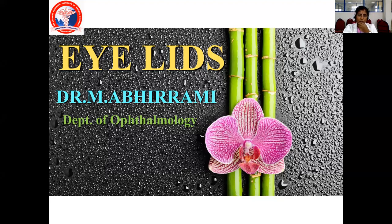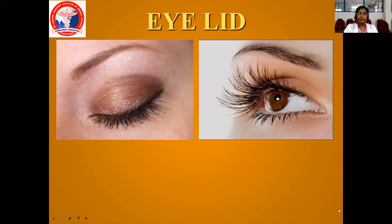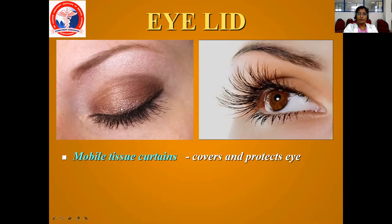Good morning. Today we are having a class on eyelids. We will start with the anatomy of eyelids. Usually we have two lids — the upper lid and lower eyelid — and we have eyelashes and eyebrows. These are the appendages or accessory apparatus of our vision.